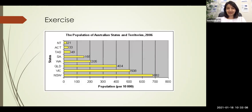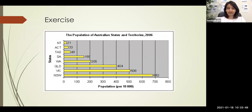I'll give you a sample answer for this question using a basic template. You can note it down and use the same template for every image. Here is the sample: 'There is a very interesting image in front of me. Let me have a closer look at it. In the image, I can see many words and numbers. In the image, I can see the population of Australian states and territories, 2006. In the image, I can see population per 10,000. In the image, I can see states — NT, ACT, and Tasmania. In the image, I can see SA, WA, and QLD. In the image, I can see VIC and NSW. In the image, I can see 21 and 33 per 10,000. In the image, I can see 49 and 155. In the image, I can see 508 and 682. In conclusion, the image is very informative.'